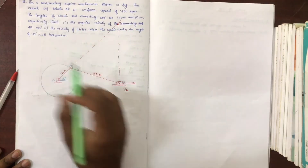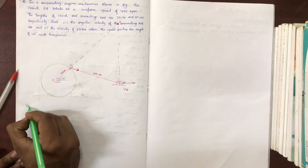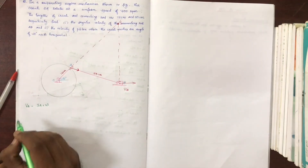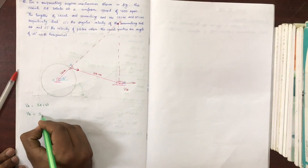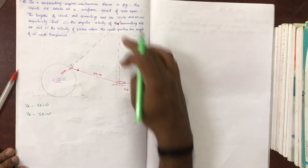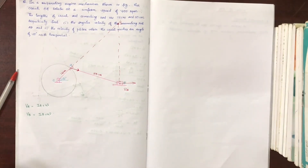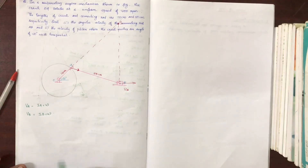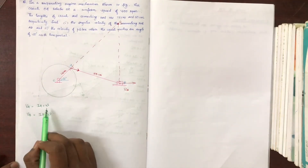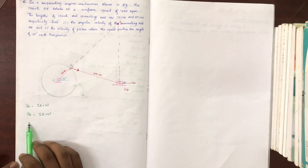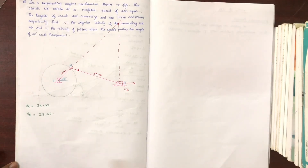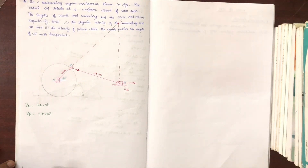We can find the angular velocity of the crank. VA is equal to I3A variable distance multiplied by omega. VB is equal to I3B variable distance multiplied by omega. We need to find VB, then use it to find the angular velocity omega of the connecting rod.